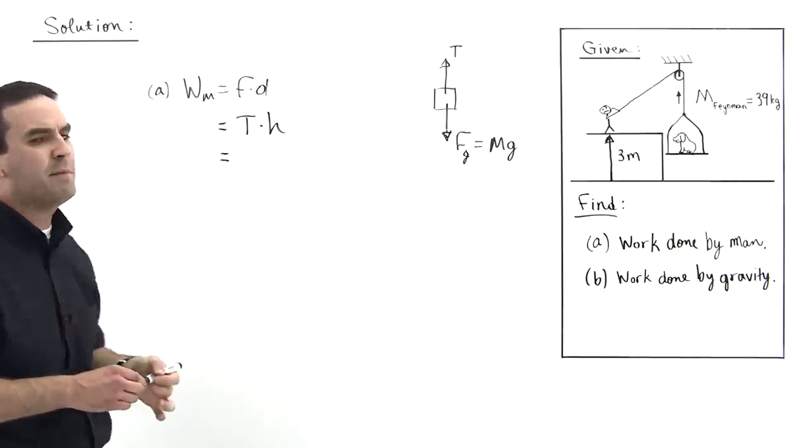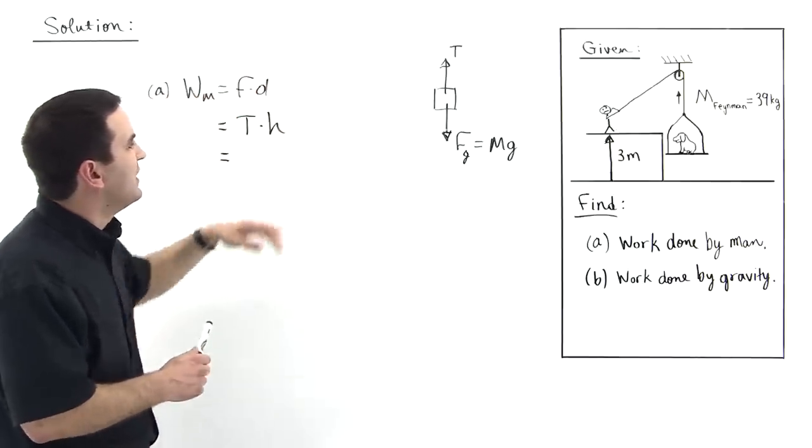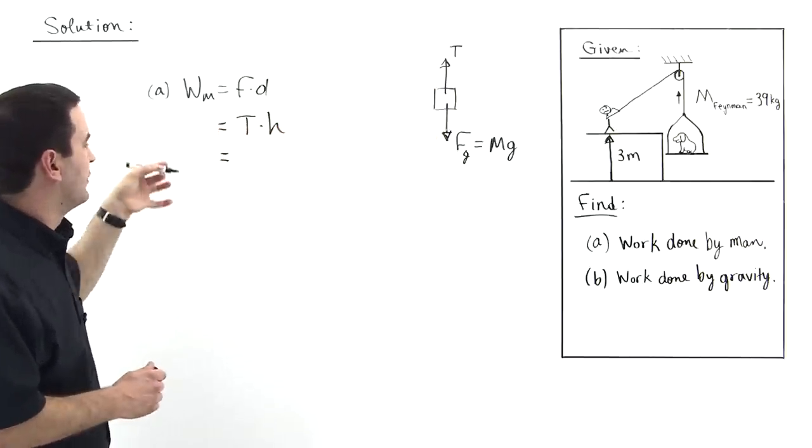We assume that Feynman is pulled up with constant velocity, and so because that's true, the tension must be equal to the weight of Feynman, which is Mg.